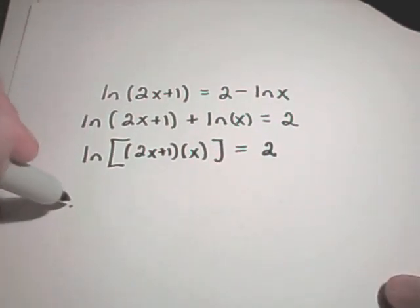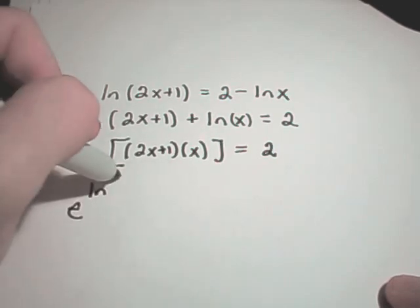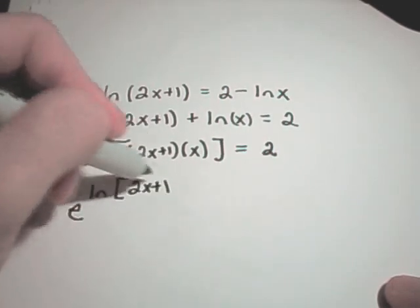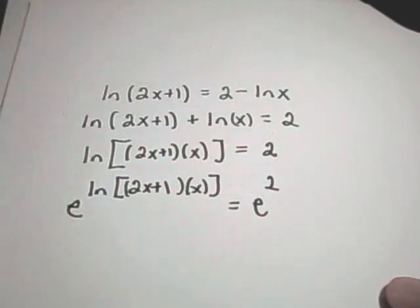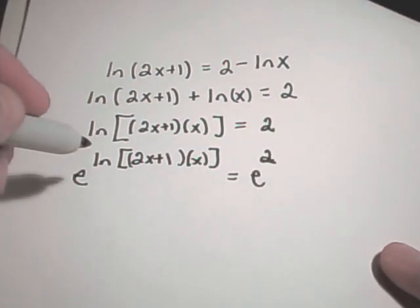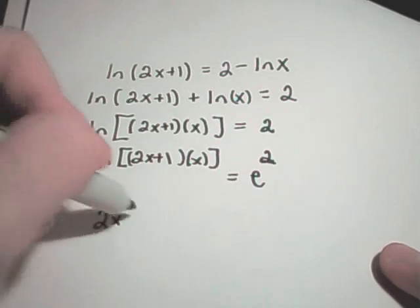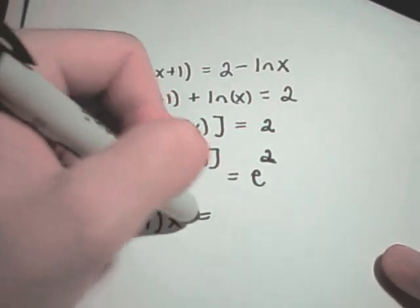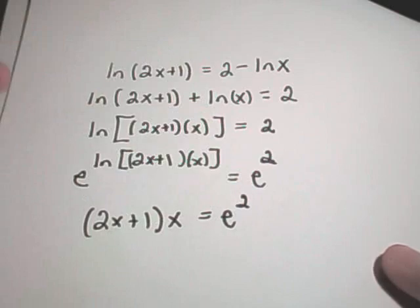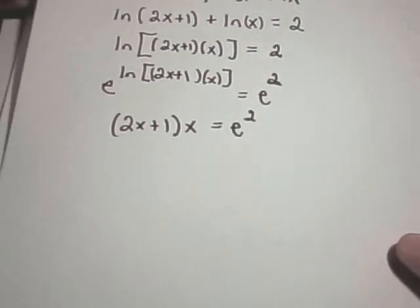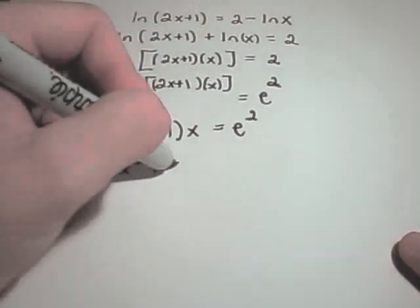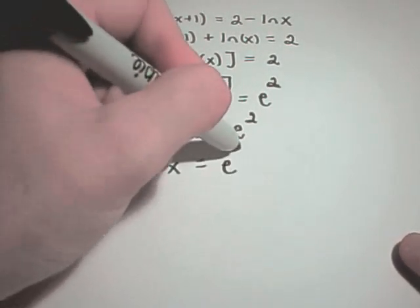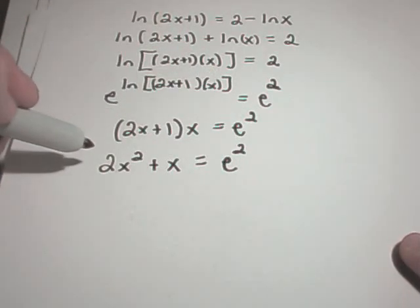Now I'm going to do this cancellation law again. I'll take the left side and raise it to the e power. I'll do the same thing on the right side as well. So I'll get e squared. Well, again on the left is cancellation property. You'll simply be left with the quantity 2x plus 1 times x equal to e squared. And if we keep multiplying this out, on the left side we'll get 2x squared. If I distribute the x, I'll get plus x equals e squared.